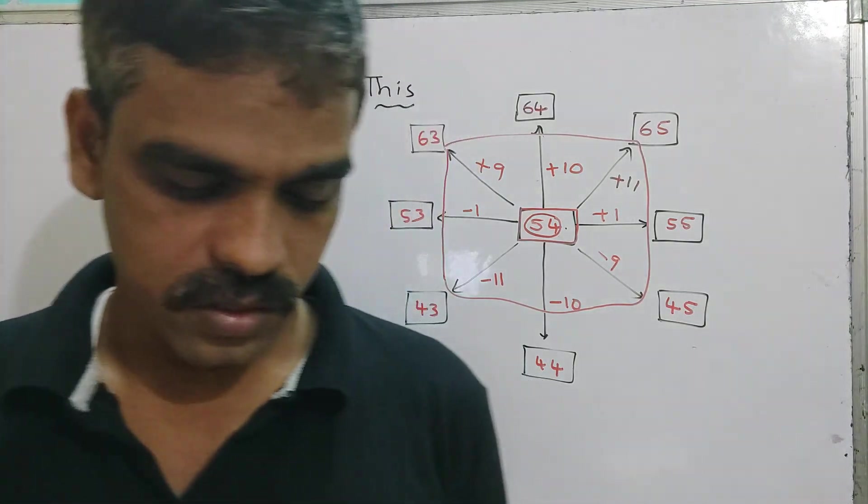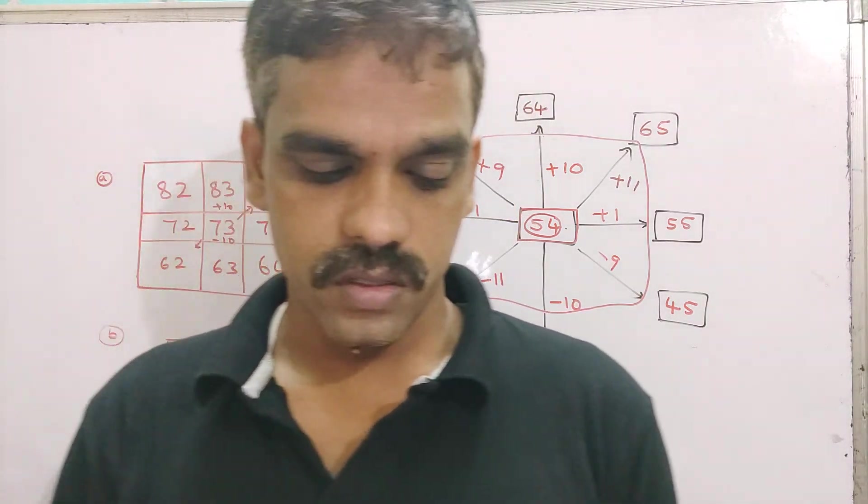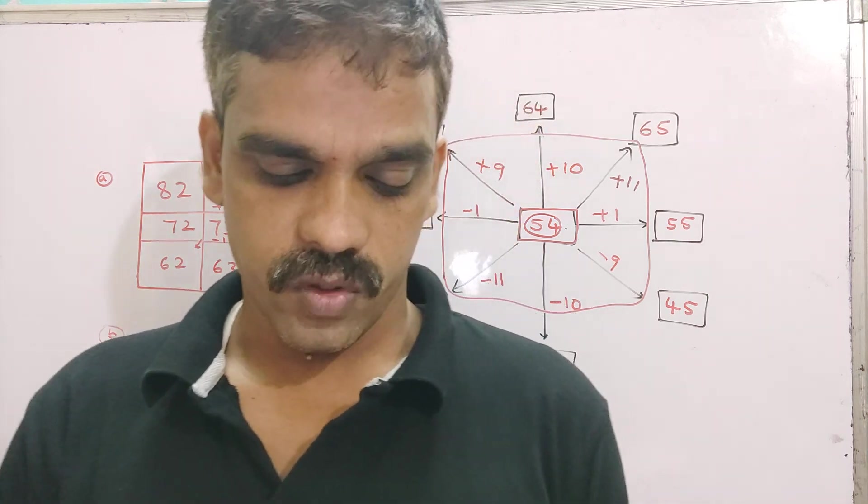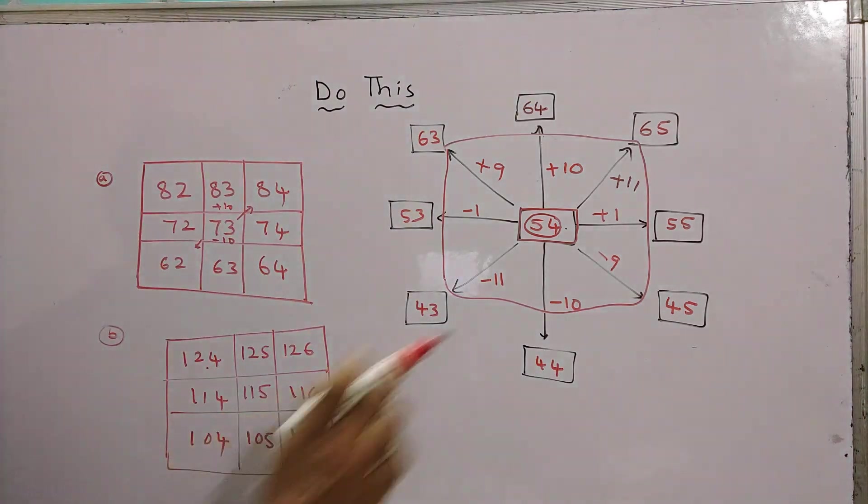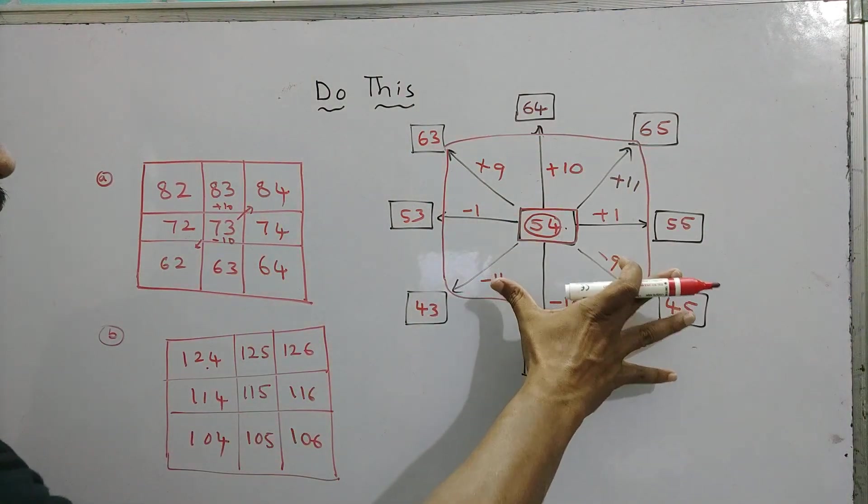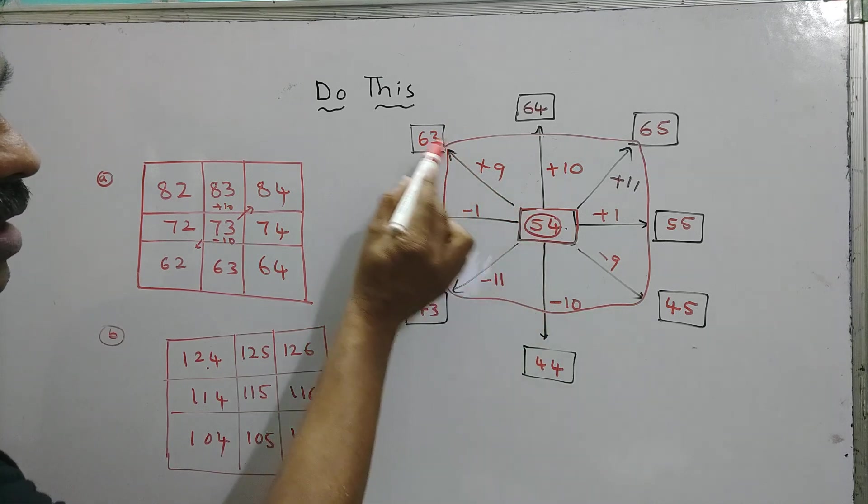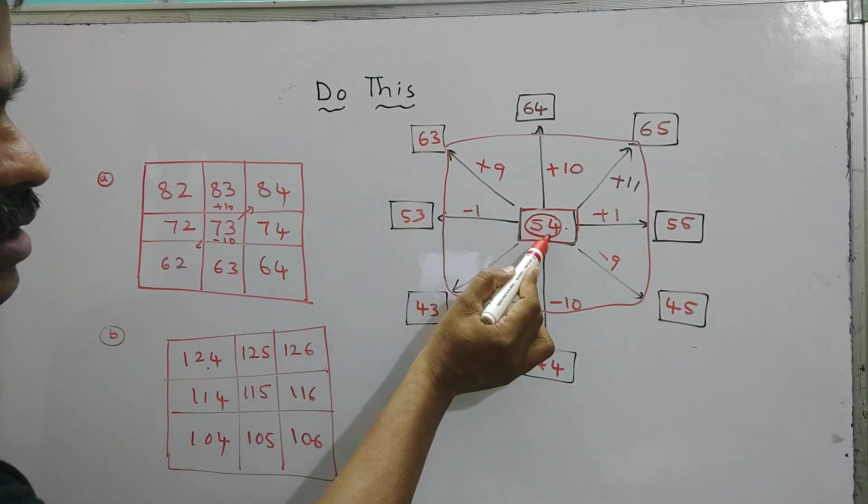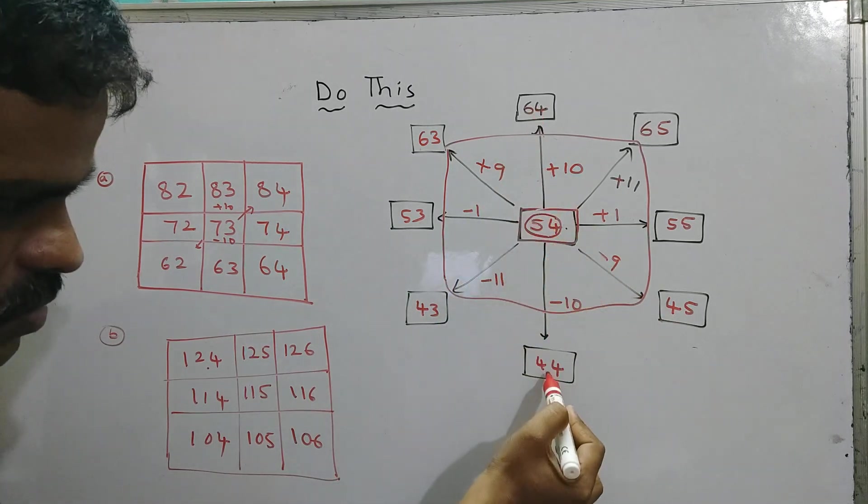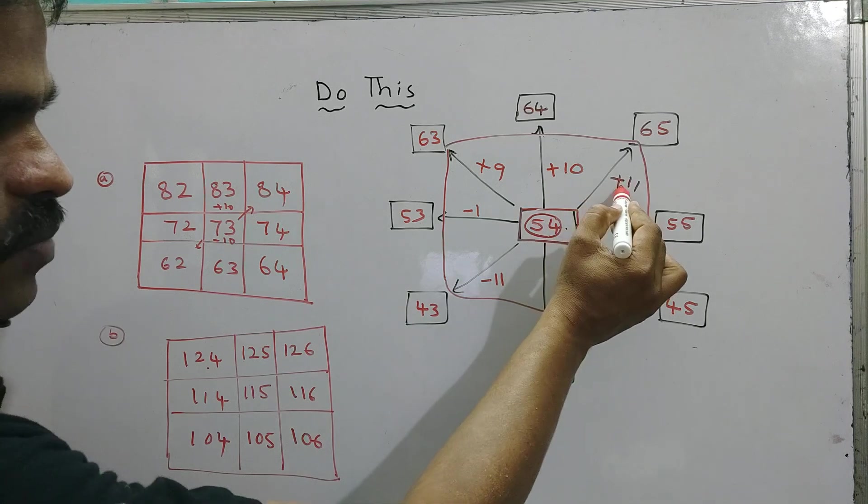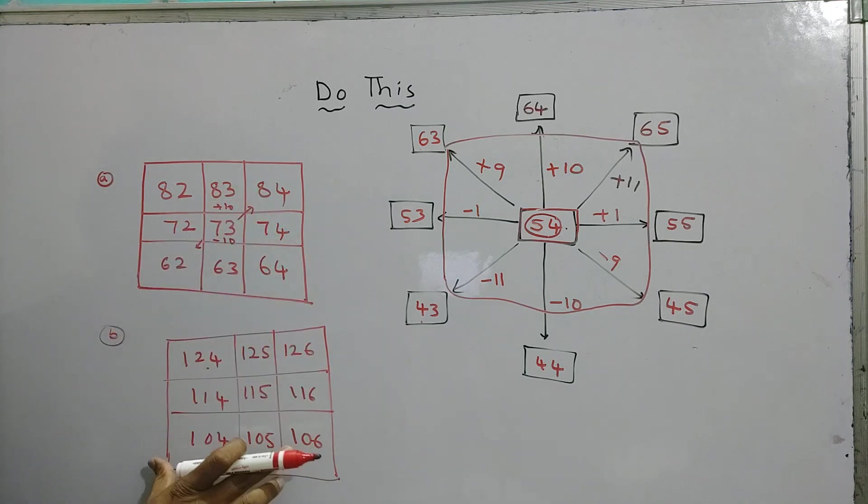So you have remaining two boxes, that is C and D, you have to fill. So one box, C box, is with 39 in center box. Then one more is 184 in center box. What I did here, just observe this first one. Observe this video, how I added plus 9. Center number plus 9, you will get this number. Center number minus 9, you will get this number. Center number plus 10, you will get. Center number minus 10, you will get this one. Center number plus 11, you will get this one. Center number minus 11 this corner, you will get. Like this I filled these two boxes.